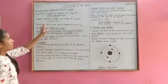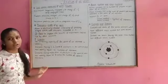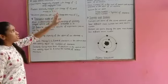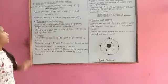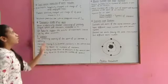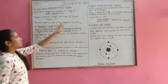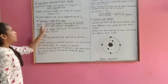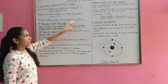Now, subatomic particles of atom includes electrons, protons and neutrons. Electrons, negatively charged with charge of minus 1 and negligible mass. Protons, positively charged with charge of plus 1 and mass is 1u. Neutrons, particles are with no charge and mass of 1u.